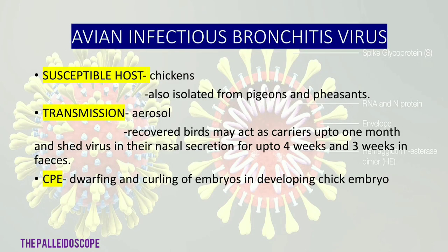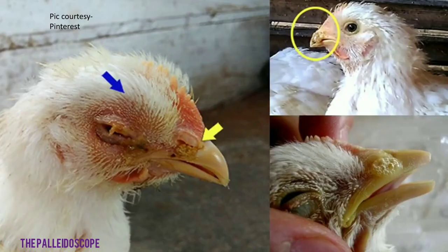The first coronavirus of veterinary importance we are discussing is Avian Infectious Bronchitis Virus (AIBV). The susceptible host is chicken, and it is also isolated from pigeons and pheasants. Its transmission is by aerosol. Birds may act as carriers for up to one month and shed virus in their nasal secretions for up to four weeks, and three weeks in pheasants. The cytopathic effect (CPE) is dwarfing and curling of embryos in developing chick embryos — this is an important point.